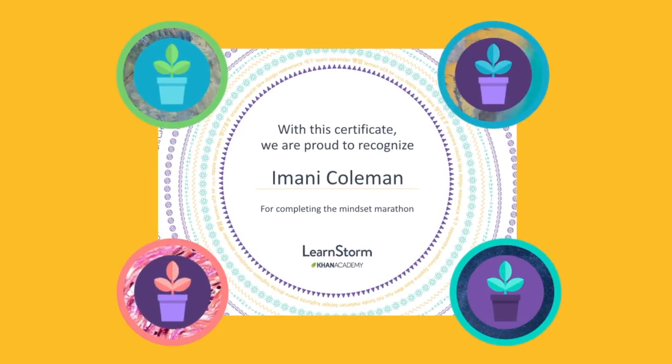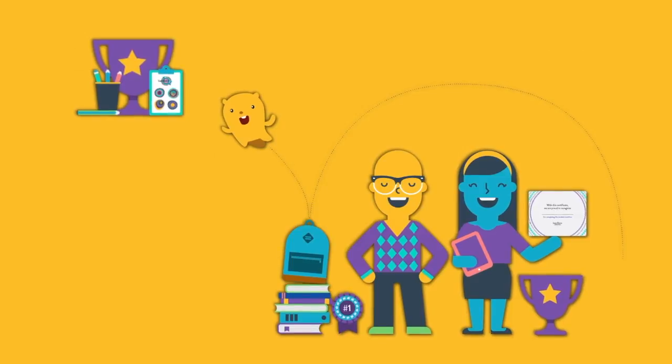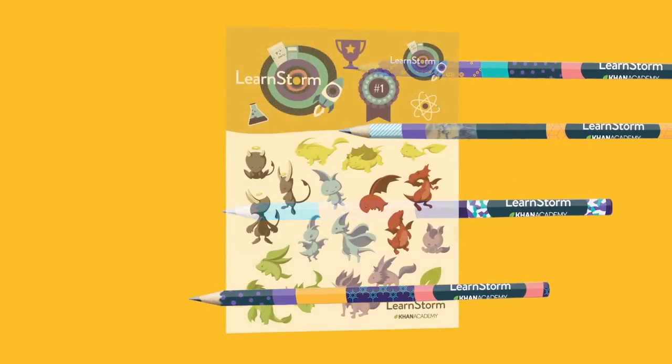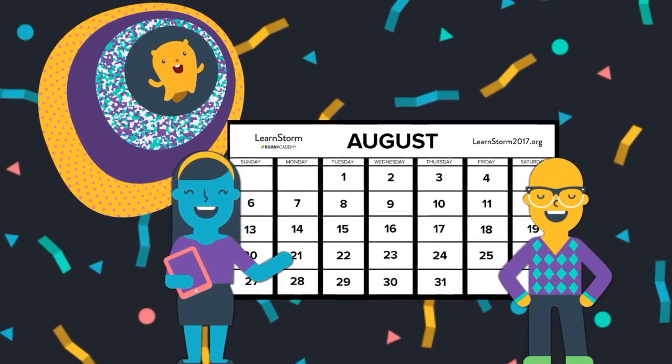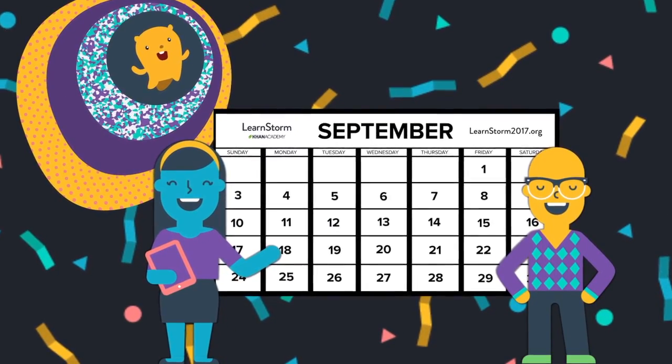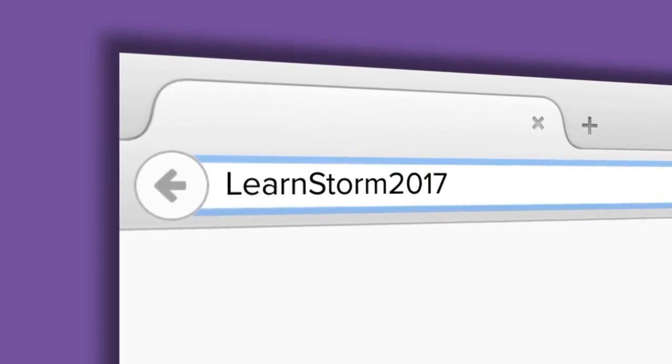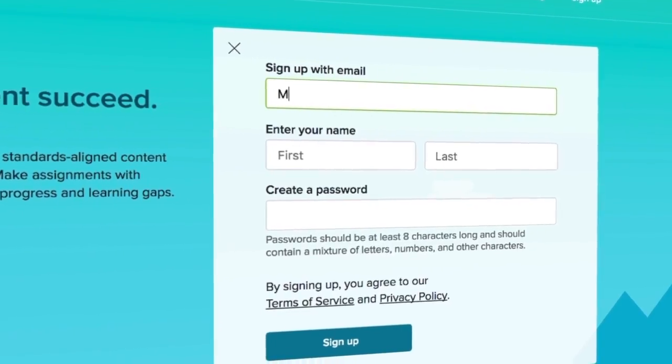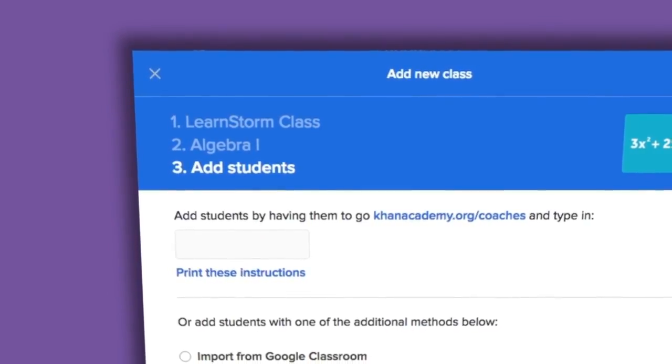Along the way, students can earn individual certificates and digital badges. Classes working together as a team can earn a box of school supplies with pencils, stickers, and lots of goodies. Schools that get really involved will earn additional prizes, national recognition, and a fun school rally. Sign up opens for teachers on August 15th, and the challenge starts on September 12th. Head to learnstorm2017.org and click Get Started Now. Once you create your free Khan Academy account and add your students, you'll be all ready to go. Don't let your students miss out — start the school year strong with Khan Academy LearnStorm. The challenge starts on September 12th, so sign up today. Good luck.